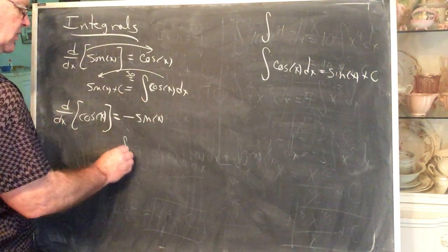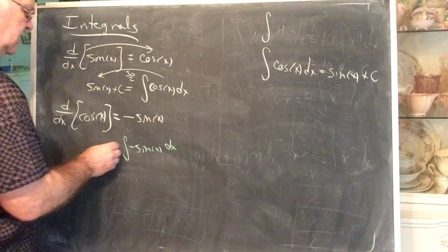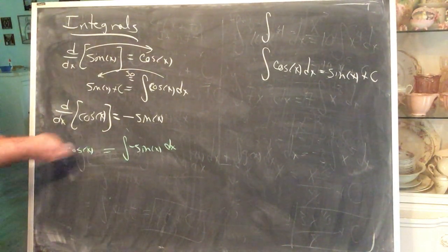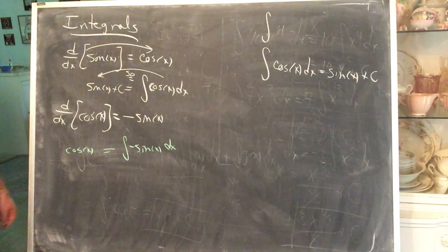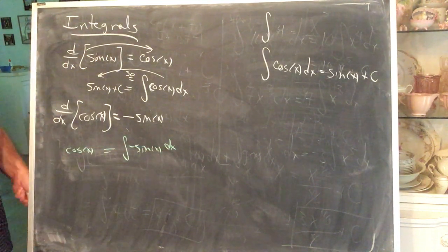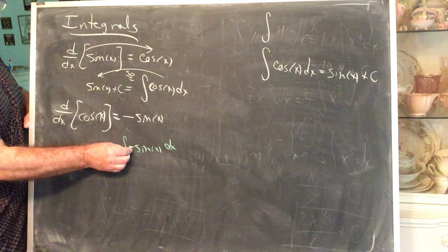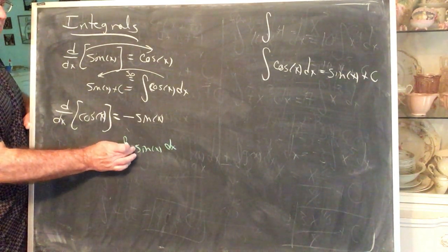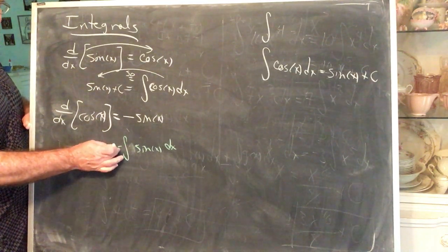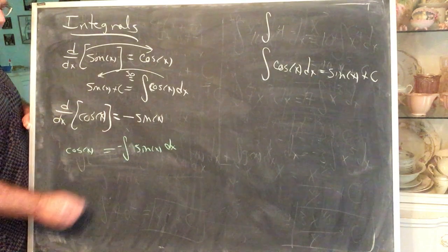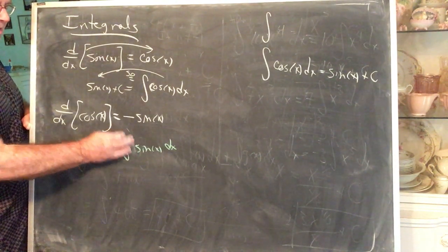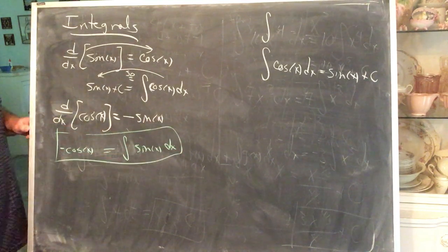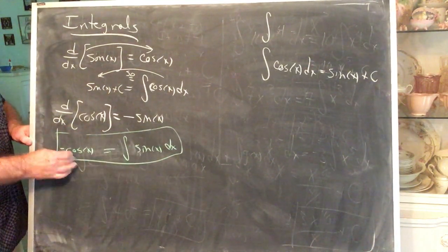The integral of negative sine is equal to cosine — that is correct, but no one ever writes it that way. We want the stated problem to be clean, and the result can be whatever it is. Since negative one is a constant multiplier, we can multiply both sides by negative one: it vanishes on one side and appears on the other. The form we use is: the integral of sine is negative cosine.